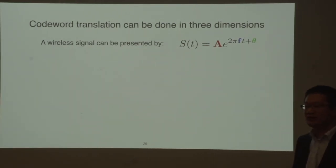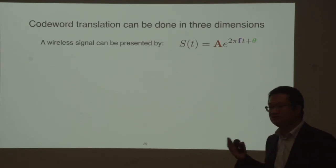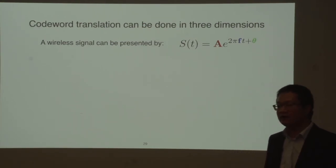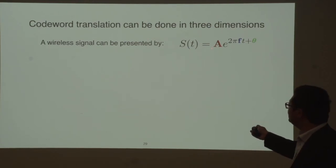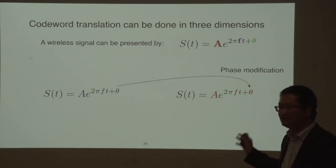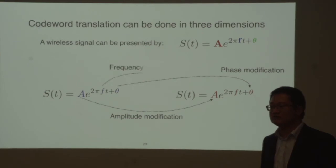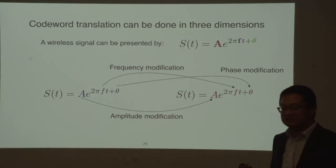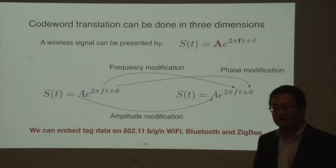The technology we invented is not limited to embedding data on 11b Wi-Fi. A Wi-Fi signal transmits information on three dimensions: amplitude, frequency, and phase. In the previous example, we modified the phase to embed tag information. We can also modify the amplitude or the frequency. By modifying these three dimensions of the wireless signal, we are able to embed tag information on top of 11b, 11g Wi-Fi, Bluetooth, and ZigBee.